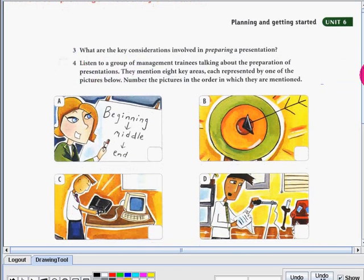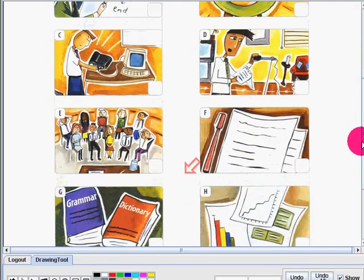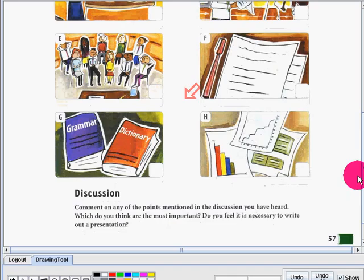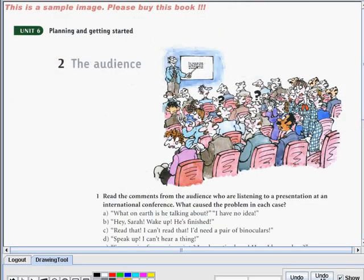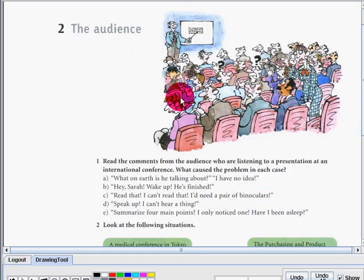This is the listening exercise. I just want you to look at the pictures. Now let's do page 58, The Audience. Look at the picture. As you can see, there is a presentation going on, right? Read the comments from the audience who are listening to a presentation at an international conference.